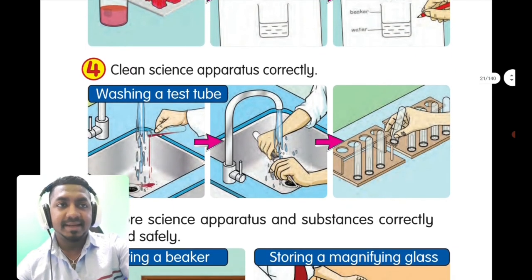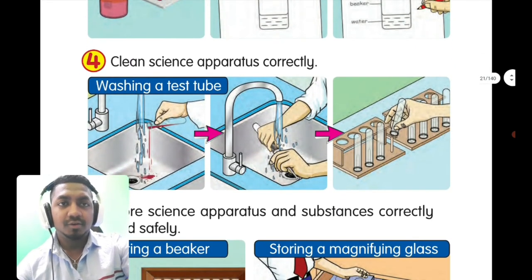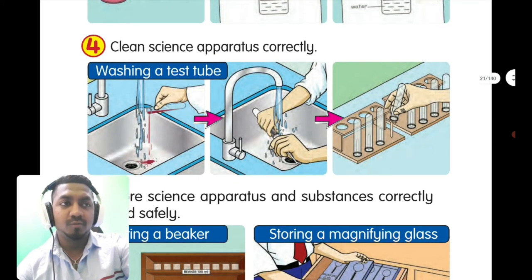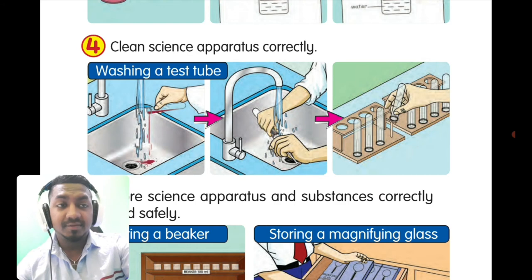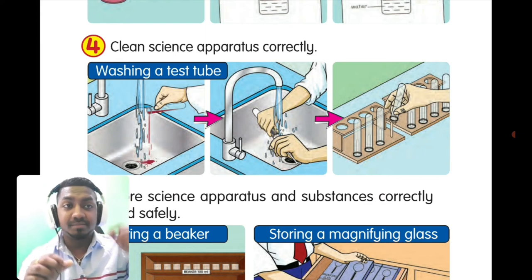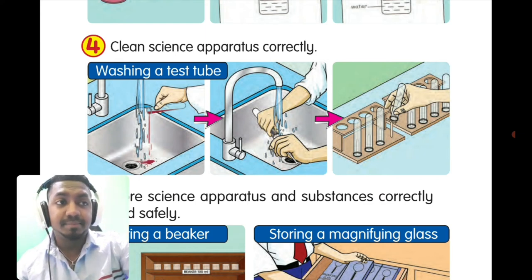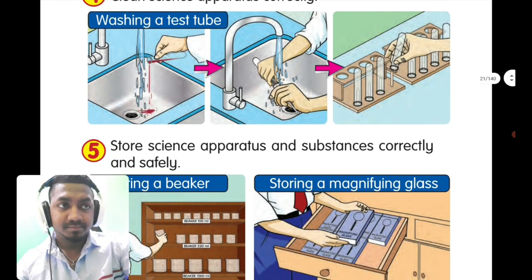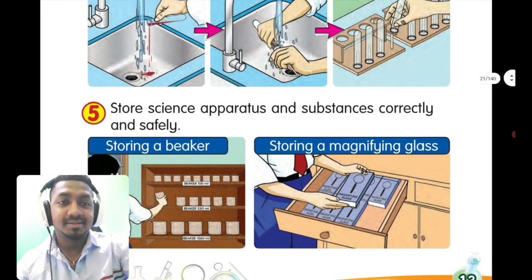Manipulative skill number four: clean science apparatus correctly. For example, washing a test tube — you pour the liquid substances into the sink, then wash the test tube using a specific brush designed for test tubes, and then place the test tube into the test tube rack.